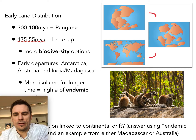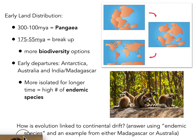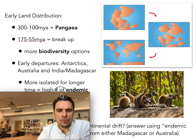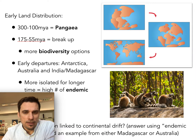When we look at this in terms of biodiversity, the question I've posed at the bottom of these notes is: how is evolution linked to continental drift? One key to answering this is to think about endemic species — for example, lemurs in Madagascar and kangaroos in Australia. Why are those unique to these places and not found elsewhere? The answer lies in continental drift and the isolation that occurred as Madagascar and Australia separated from other land masses.